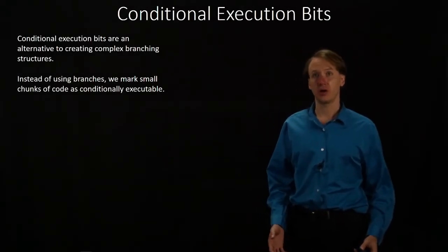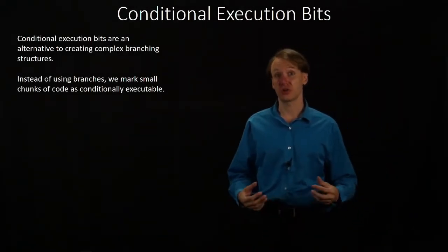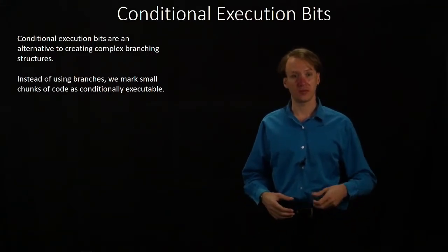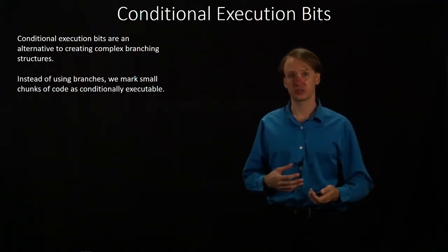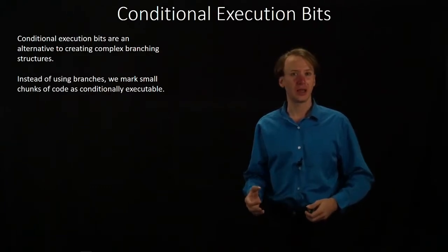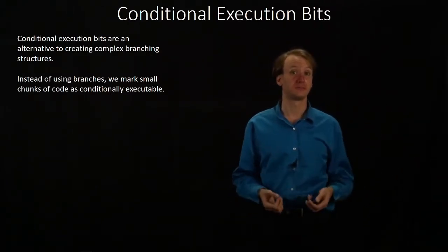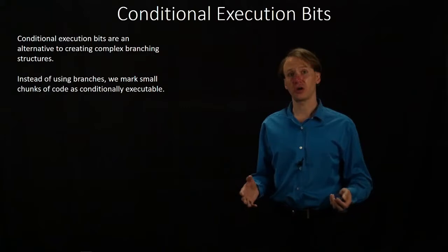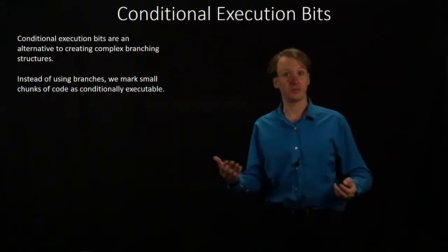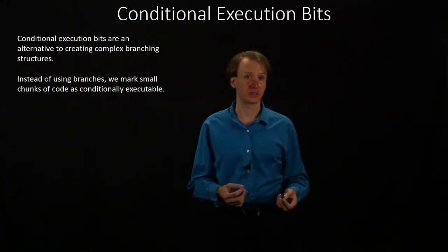Conditional execution bits are an alternative to having branch instructions in our architecture. So far we've looked at having branch instructions where we determine if some condition is true and then we go somewhere else. Instead of using a branch instruction for, say, an if block, we could use conditional execution bits.